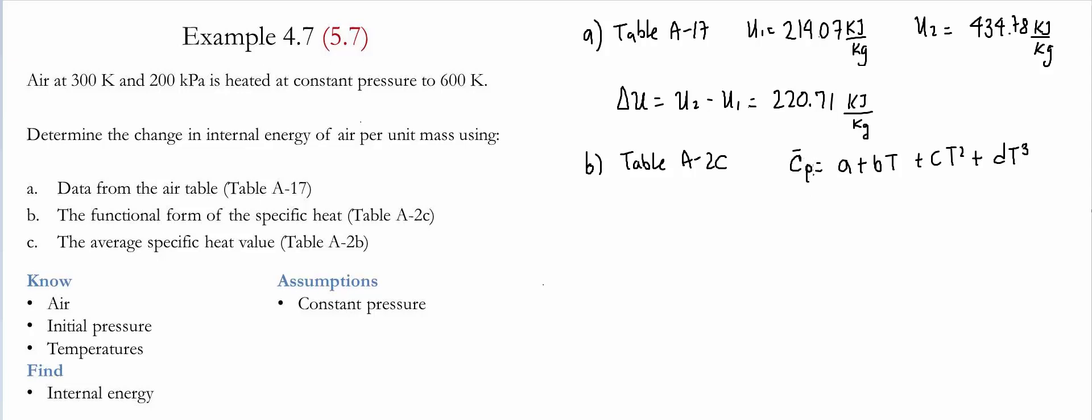This specific heat at constant pressure is related to the specific heat at constant volume by this relationship: Cp bar is equal to Cv bar plus the universal gas constant. Our goal is to be able to find Cv bar, which is the one related to the internal energy.